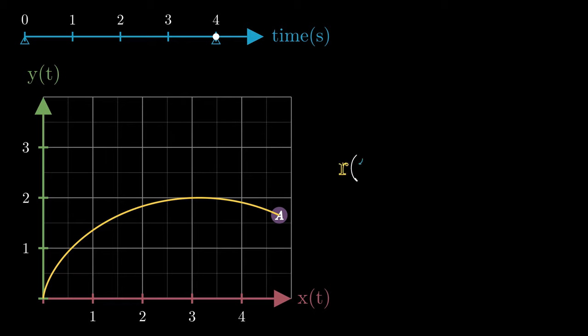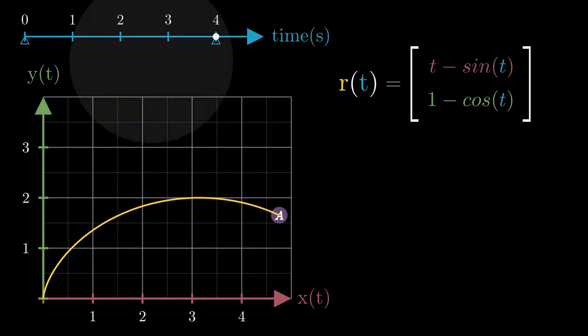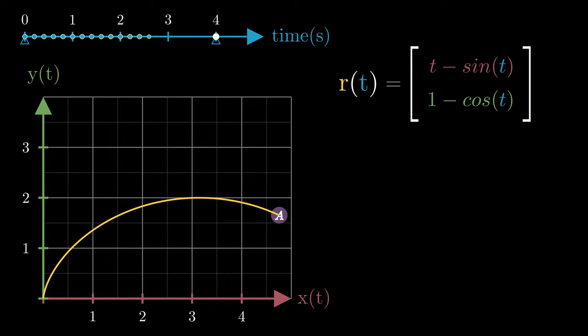The parametric function R defining this curve takes in time as input and spits out a vector with coordinates t minus sin t and 1 minus cos t representing a point on the curve. So the parametric function maps inputs along the time axis to a point on the plane along the curve.